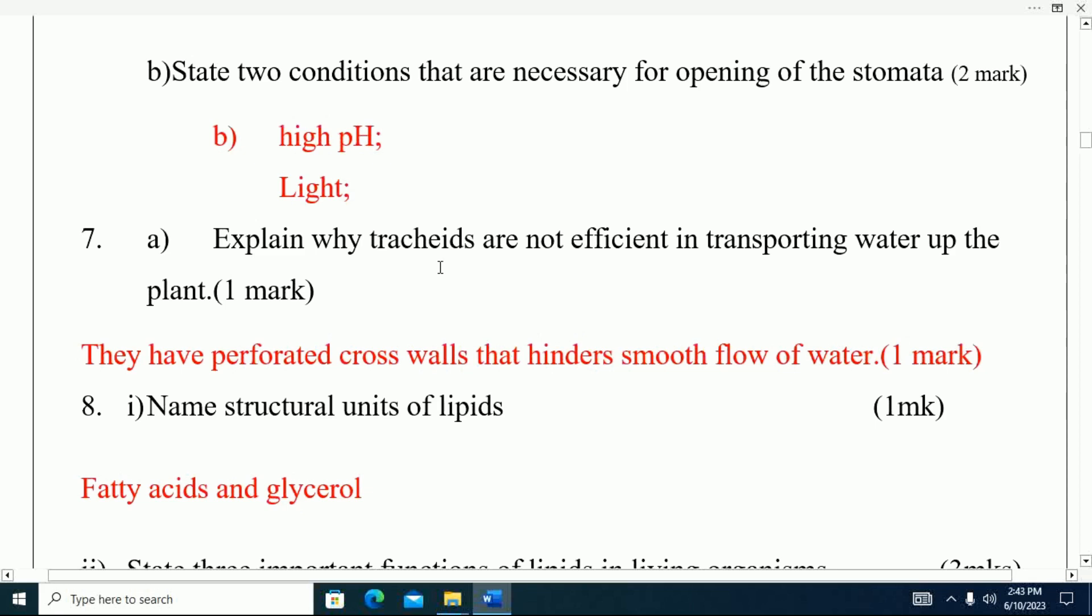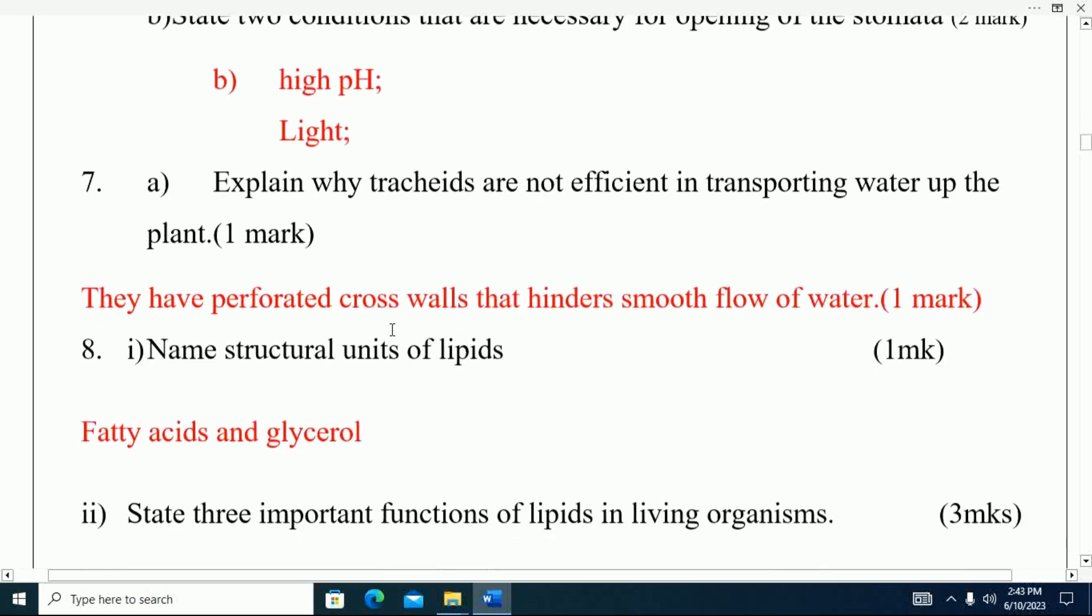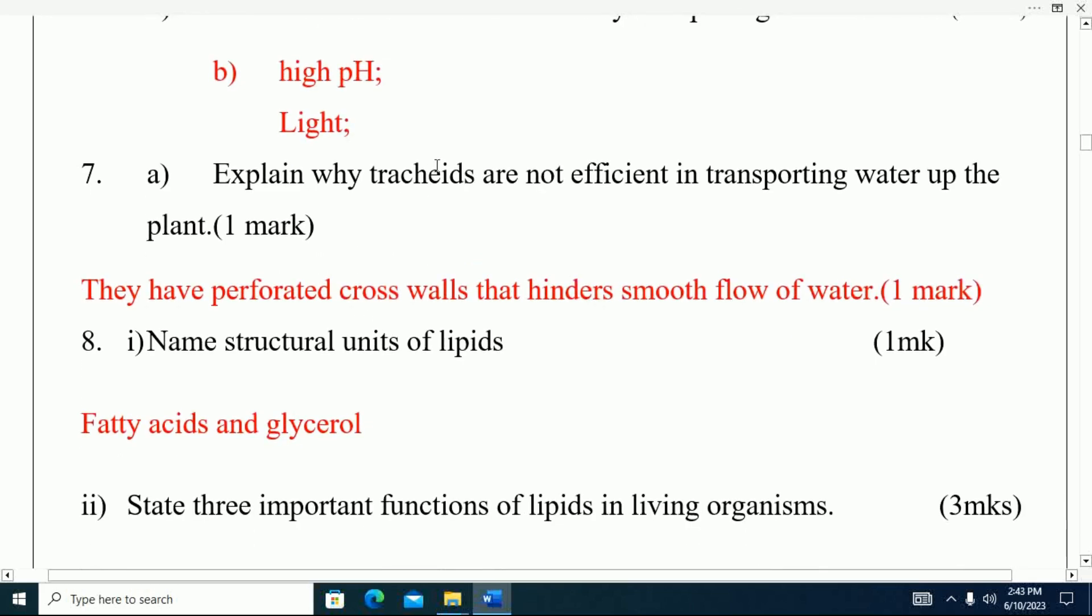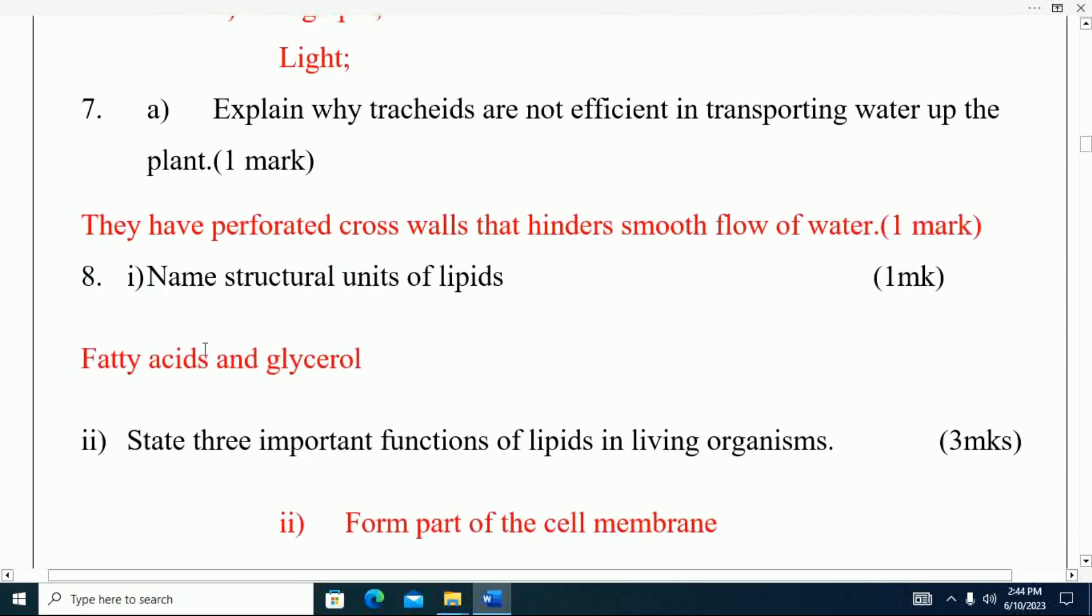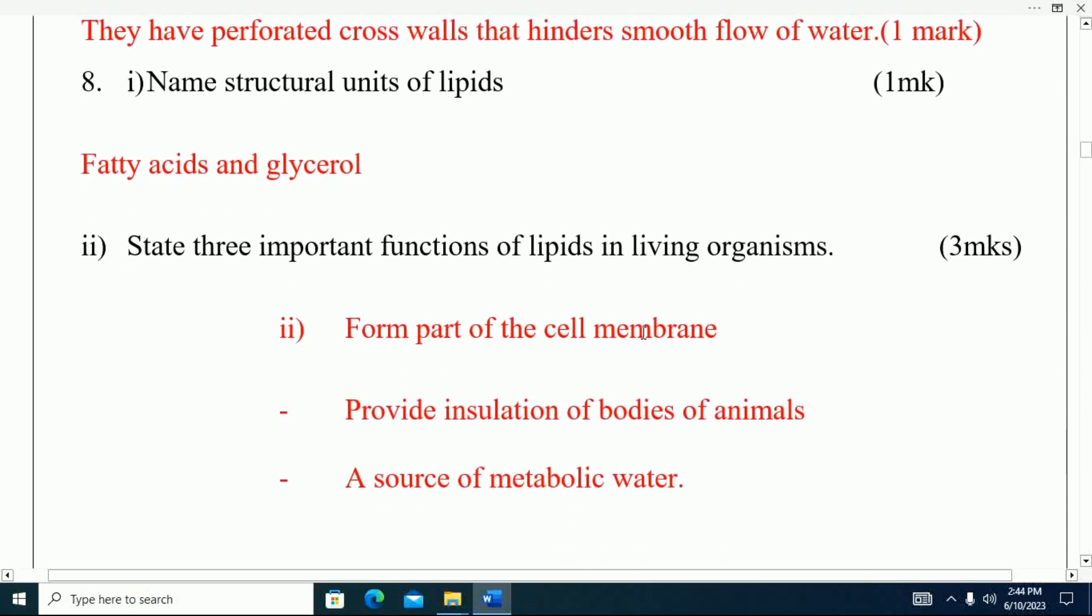Question number seven: Explain why tracheids are not efficient in transporting water up the plants. The reason is they have perforated cross walls that hinder smooth flow of water. Next question: Name a structural unit of lipids. That one is fatty acids and glycerol.